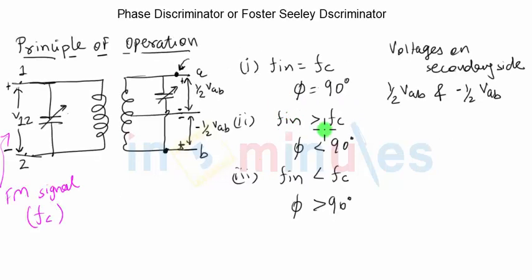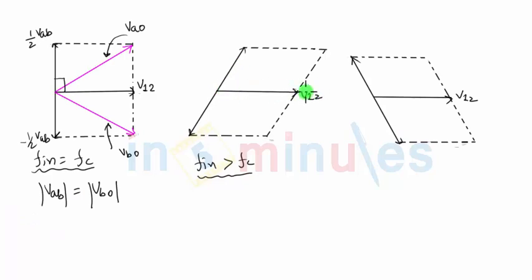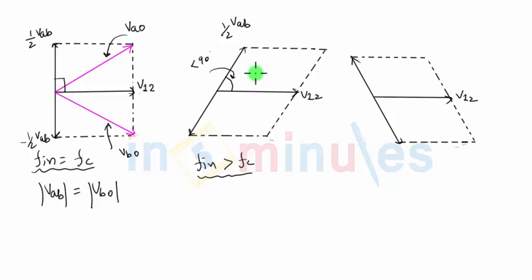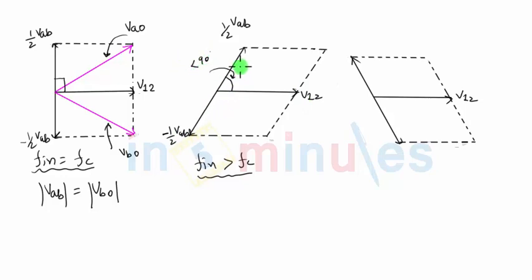In point number 2 we mentioned that when Fn is greater than Fc, the phase difference between primary and secondary voltage will be less than 90 degrees. V12 is still the reference voltage. The phase difference between V12 and the secondary voltage — half VAB — is less than 90 degrees. Minus half VAB will always be opposite to half VAB since they are 180 degrees out of phase. Therefore, when half VAB and V12 have a phase difference less than 90 degrees, minus half VAB and V12 will have a phase difference greater than 90 degrees.